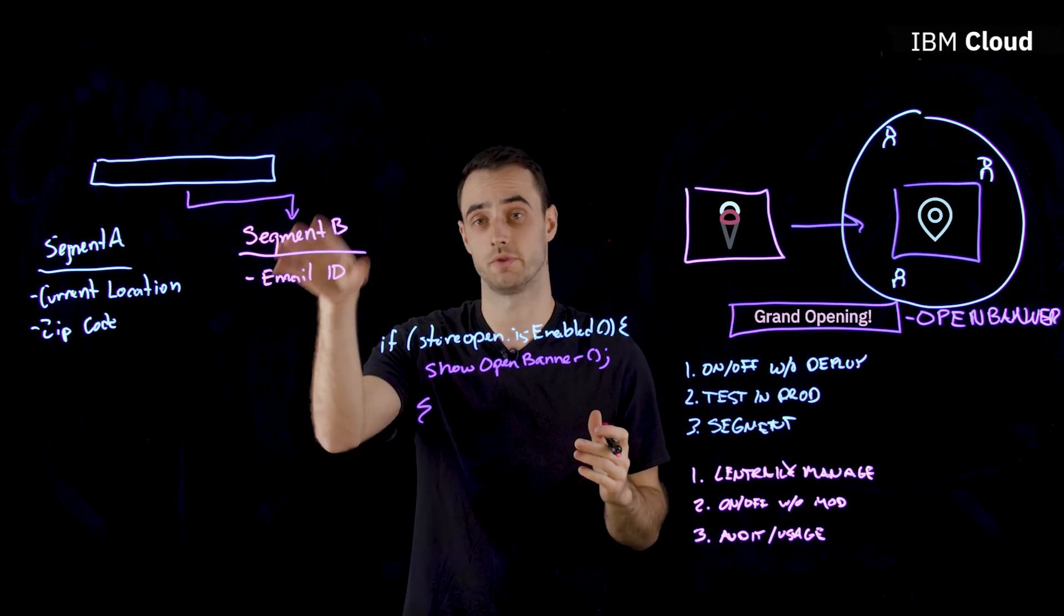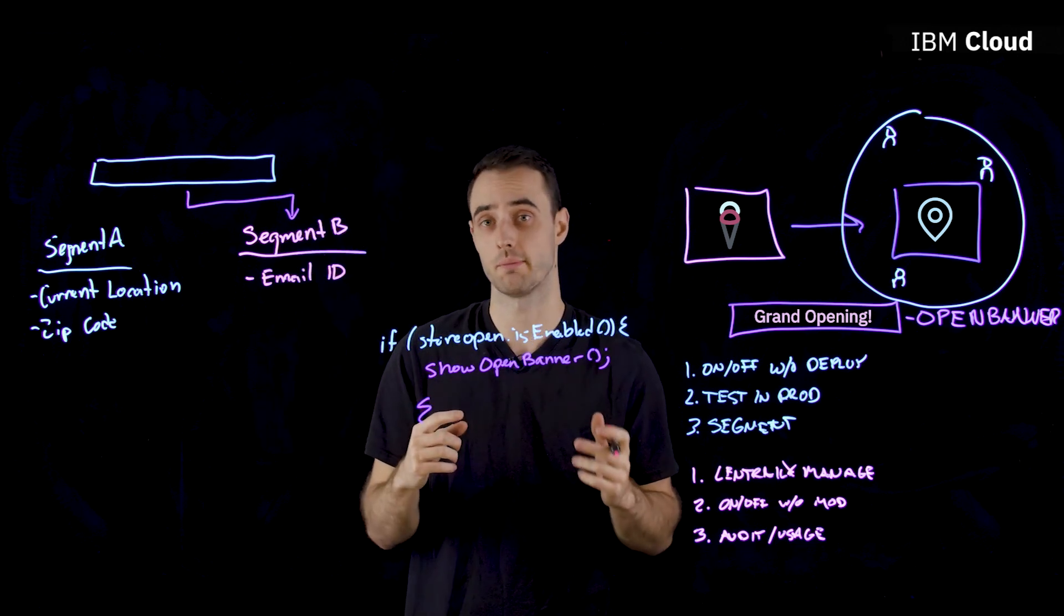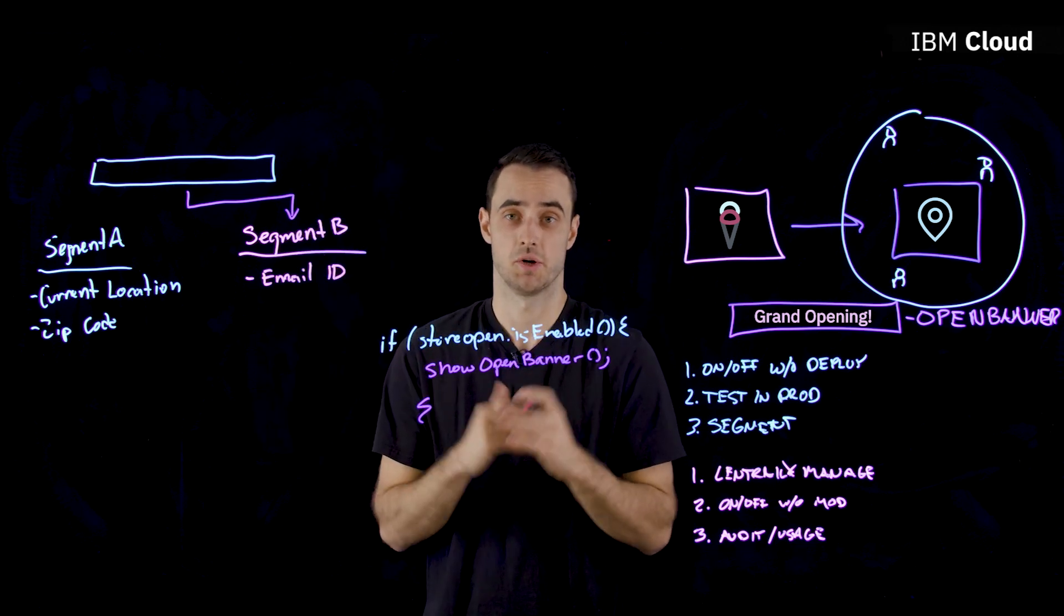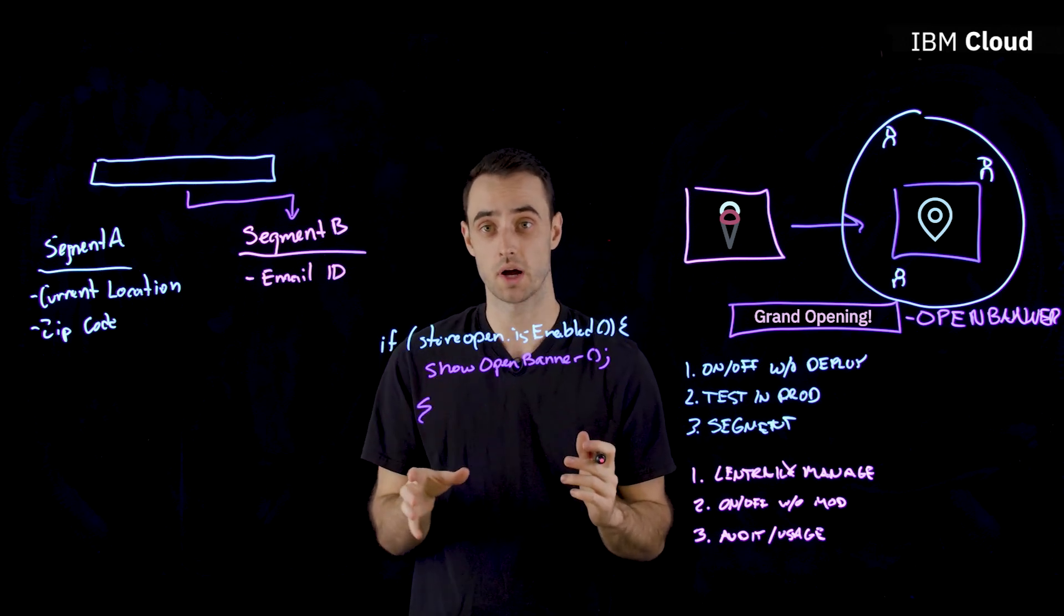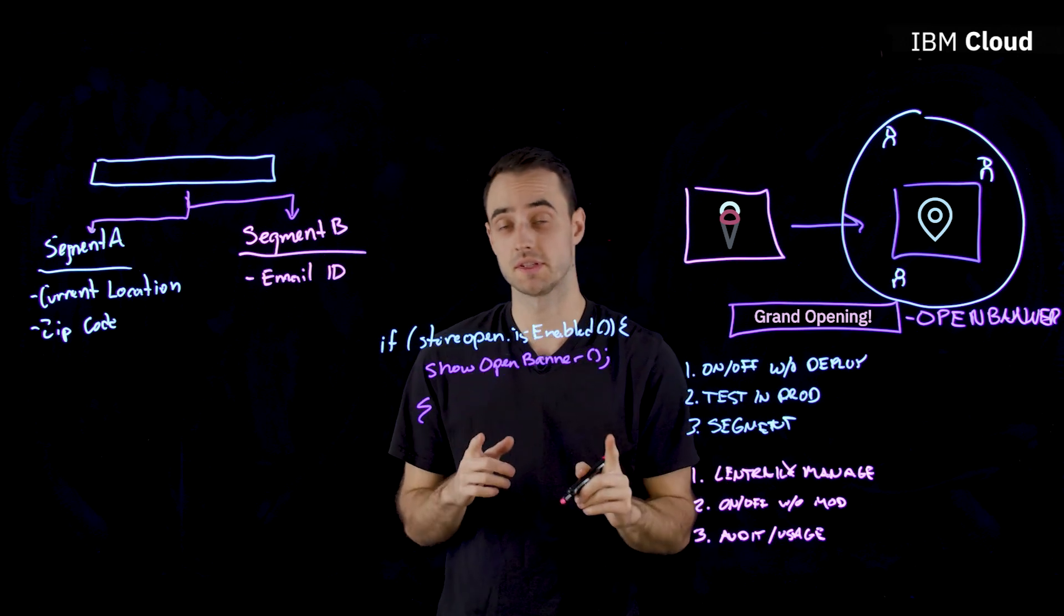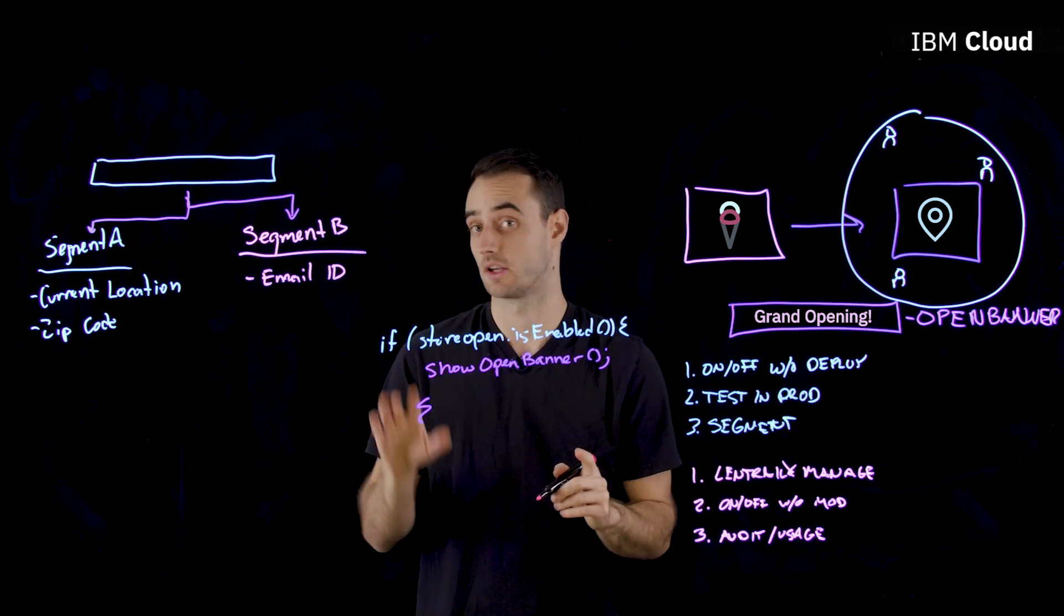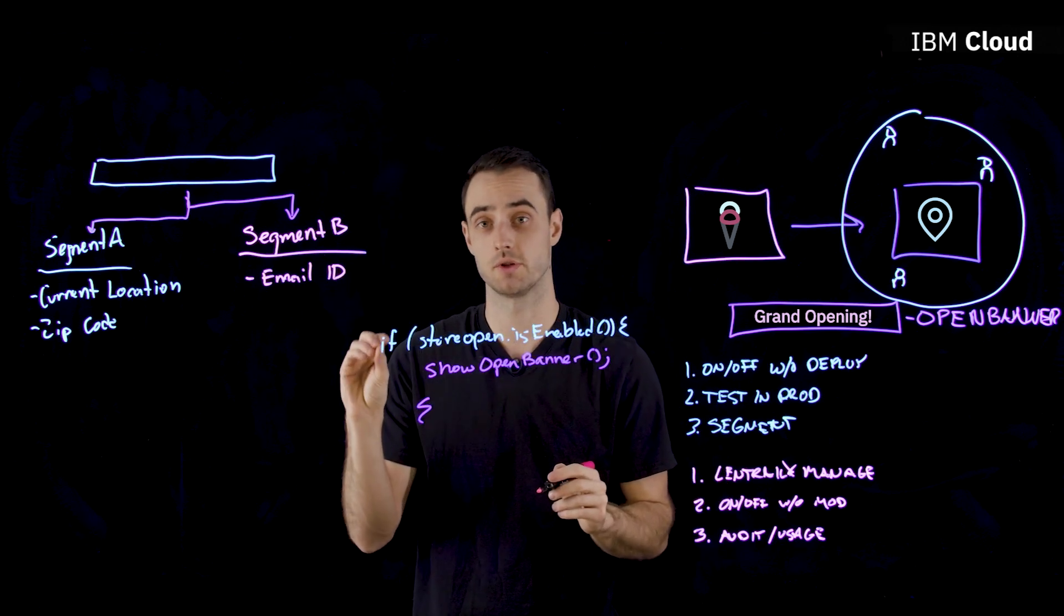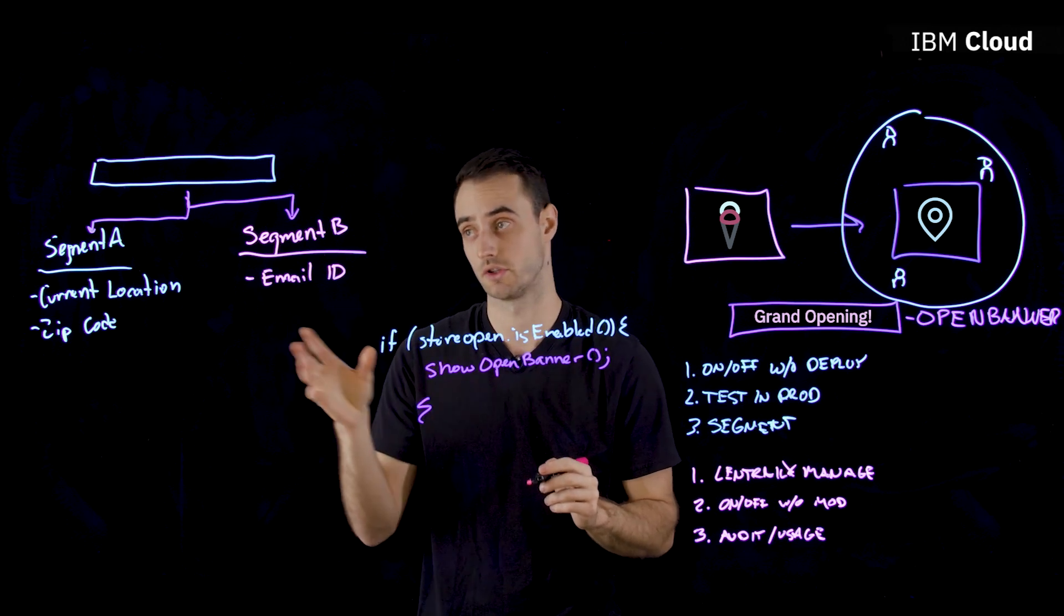So now this feature is on for our testers. And say maybe something went wrong. So we're actually going to flip it off, fix it, and then we'll turn it back on for segment B. Once we're satisfied that everything is working well, then we can flip this on for our segment A. Now all this is done without a deployment. Because our feature is already in production, all we're doing is making it visible or not visible to certain users.